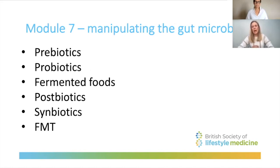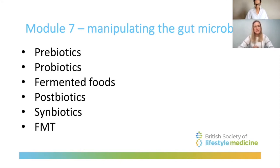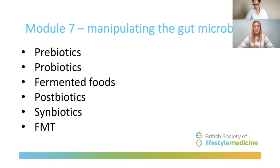Module seven looks at how we can manipulate our gut microbiome — a really interesting novel field that drug companies are certainly latching on to. We look at different things we can take that influence our microbiota: starting with prebiotics, which are natural fibers found in fruits, vegetables, whole grains, seeds, and nuts, and how these influence our microbiota. Then we move on to probiotics — the microorganisms that benefit us — where we get them, what they are, and a deeper dive into fermented foods and their benefits.